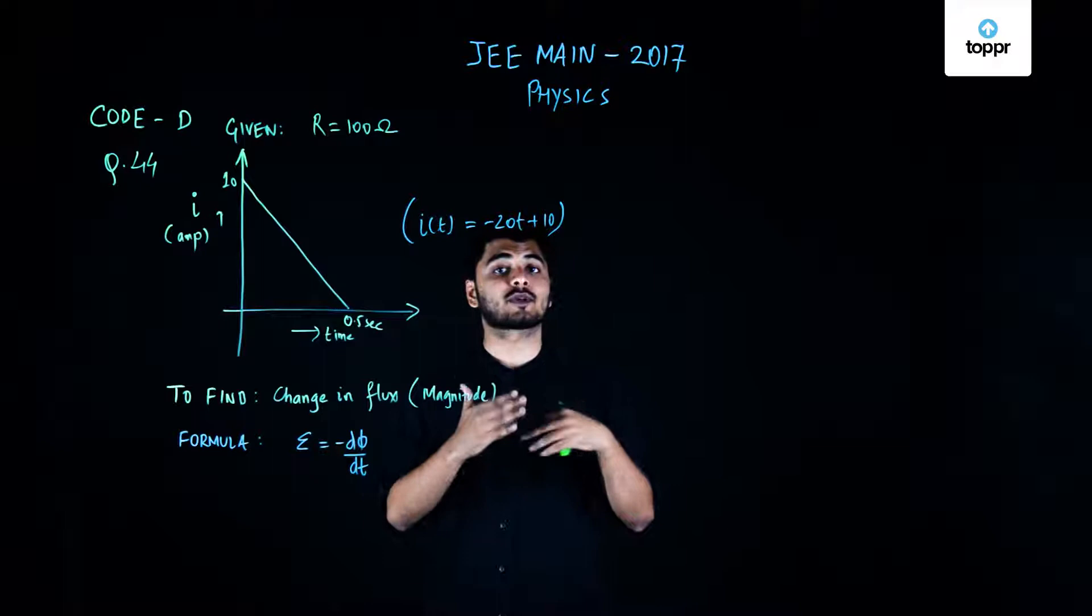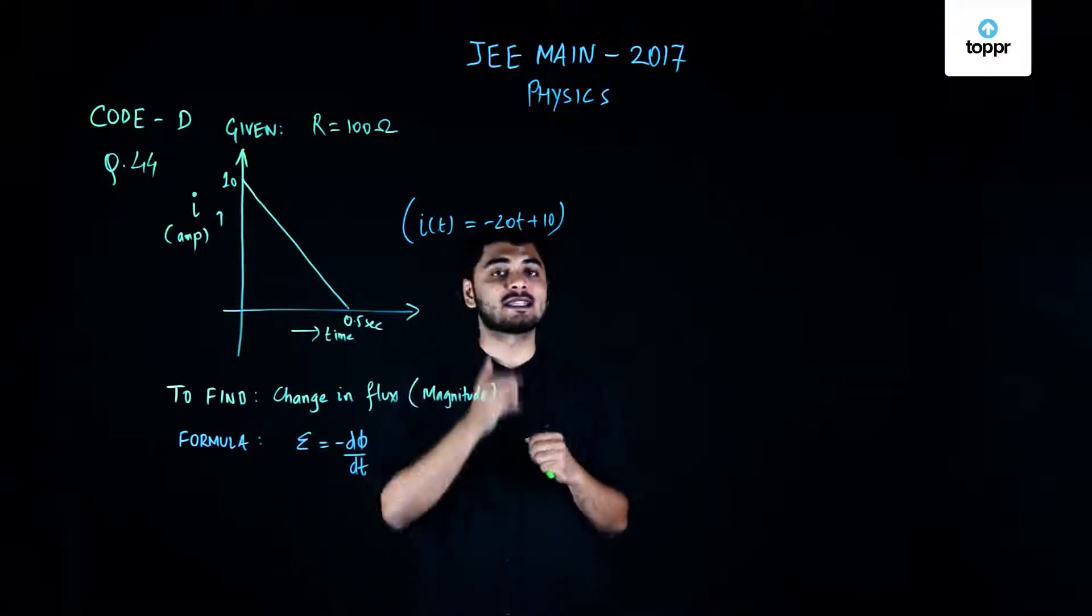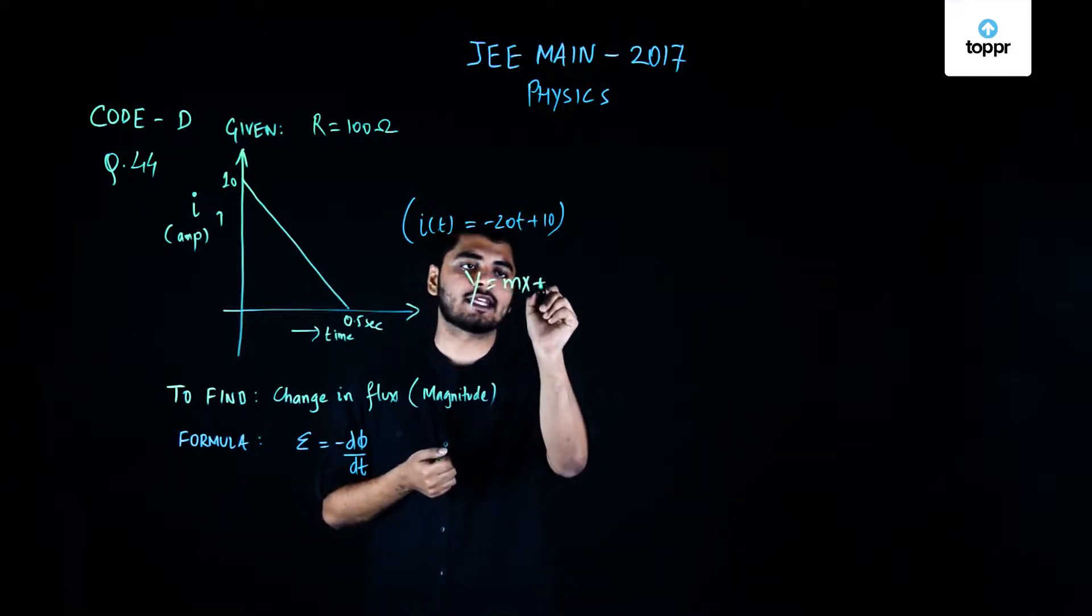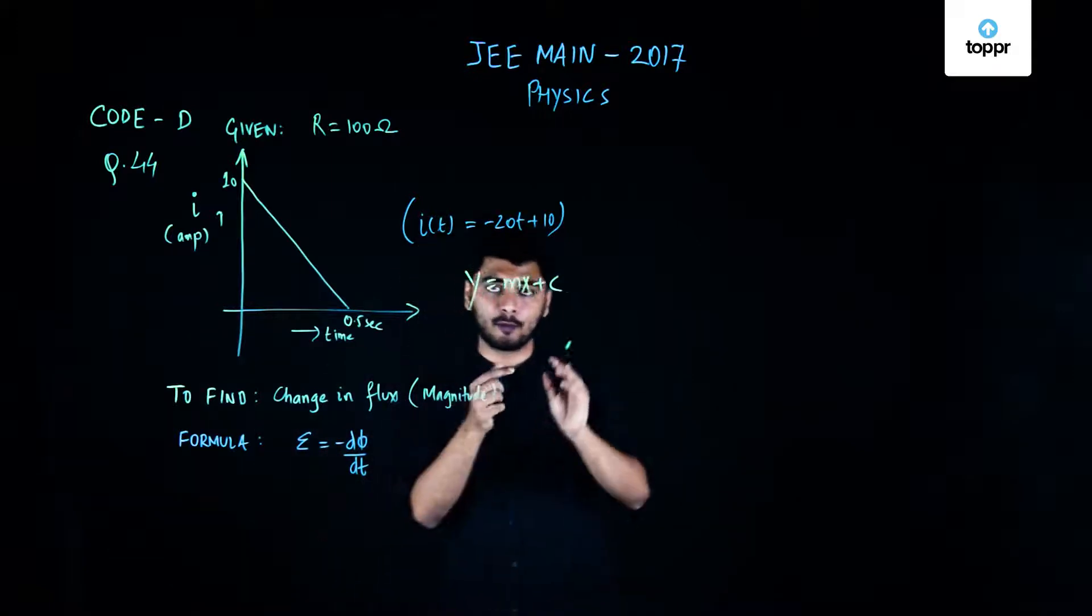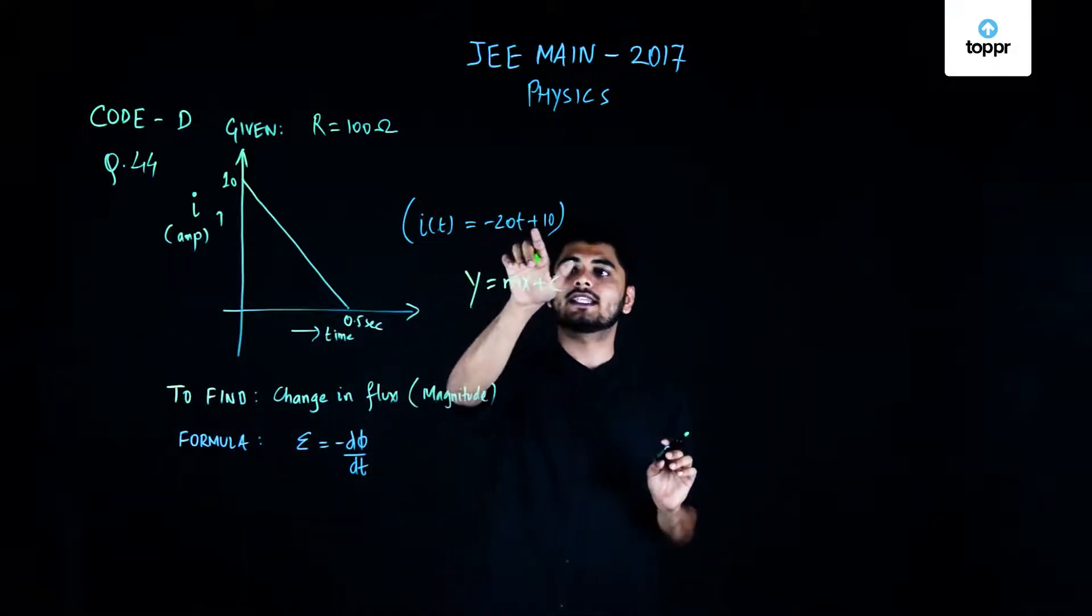One thing I must do before I proceed is I express my current as a function of time in form of a simple equation. So I use y equals mx plus c to represent the equation of this line and when I put all the values I get my current as a function of time to be minus 20t plus 10.